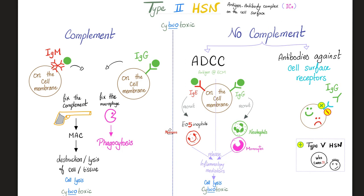Without complement, there are two sub-stories: ADCC (antibody-dependent cell-mediated cytotoxicity) and antibodies against cell surface receptors. In ADCC, IgE recruits eosinophils — the story of allergy, asthma, bee stings, anaphylaxis, and parasites — while IgG activates and recruits neutrophils and monocytes. In both cases, the end result is the release of inflammatory mediators causing cell lysis — cytotoxicity.